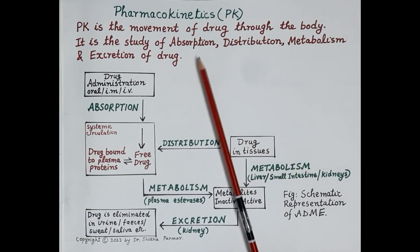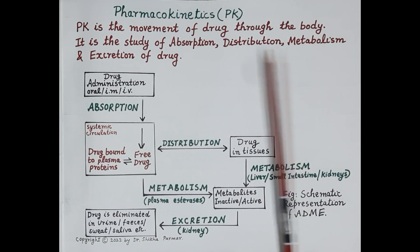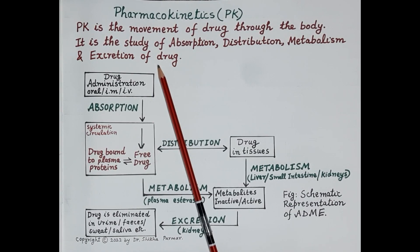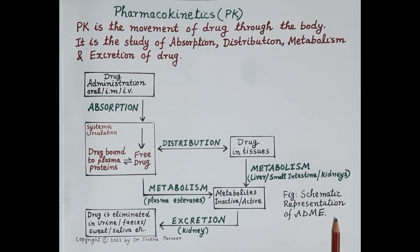When a drug moves through the body, it is absorbed, then there is distribution, metabolism, and finally excretion. So pharmacokinetics deals with what the body does to a drug, referred to as ADME. This figure shows a schematic representation of ADME — that is, the schematic representation of pharmacokinetics.